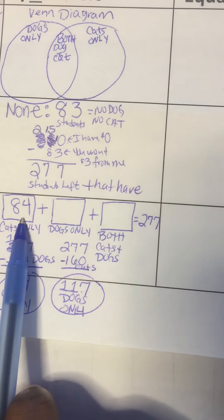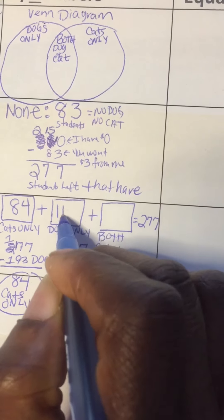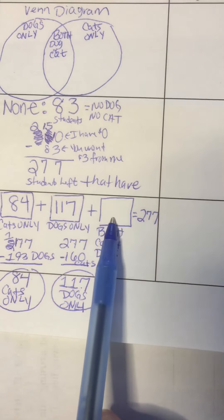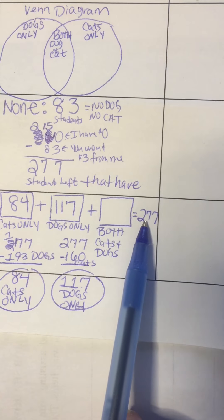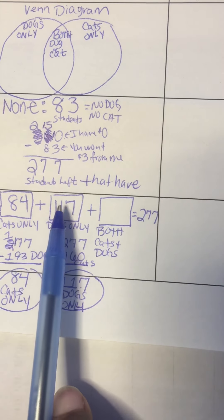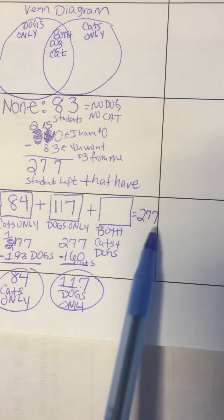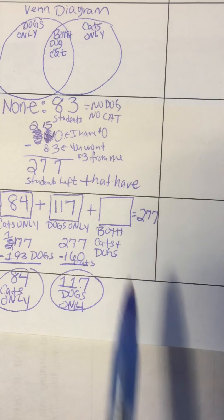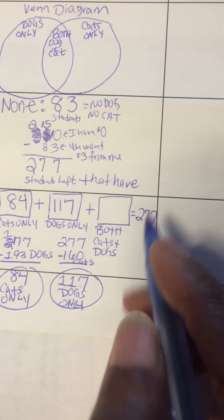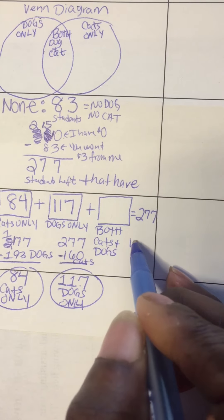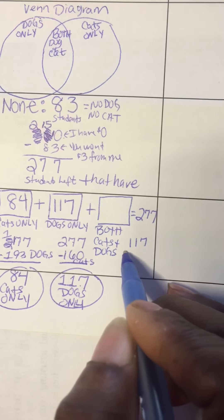So now we have 84, we have 117, and then we need another number to equal up to 277. 84 plus 117, cats and dogs plus both is equal to 277. So I'm going to do, how much is 117 plus 84?